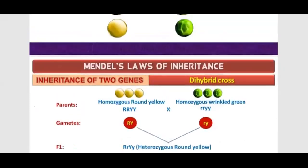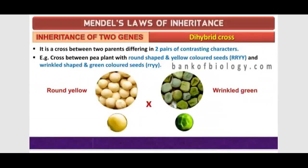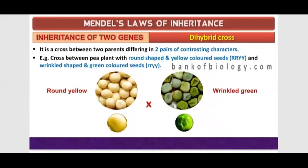Inheritance of two genes — inheritance of two different pairs. Like color and round — meaning it has a shape and yellow, meaning it has a color too. In wrinkled green, it has a shape and a color too.